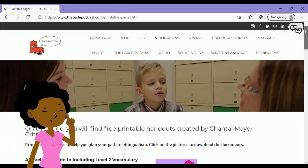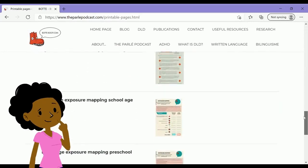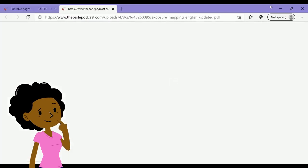There, you will have the choice between two forms, school and preschool. Click on the image that corresponds to the chosen form to download it.